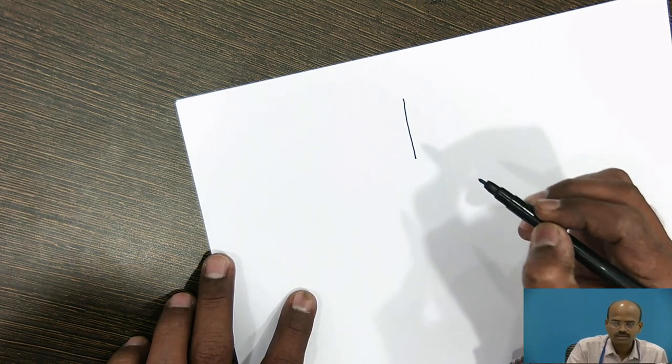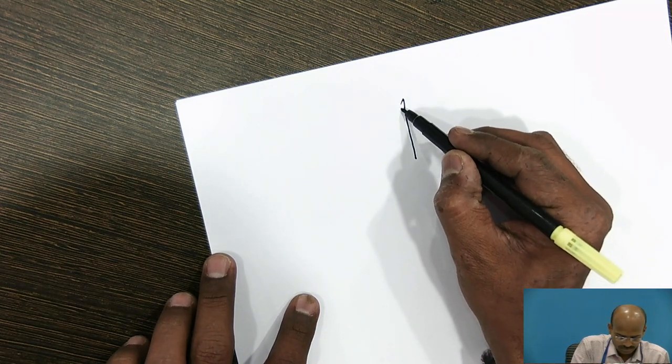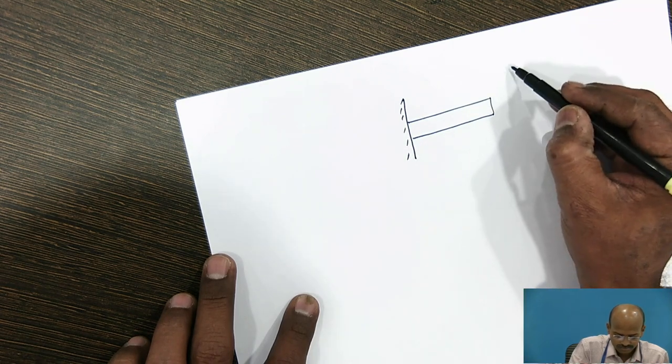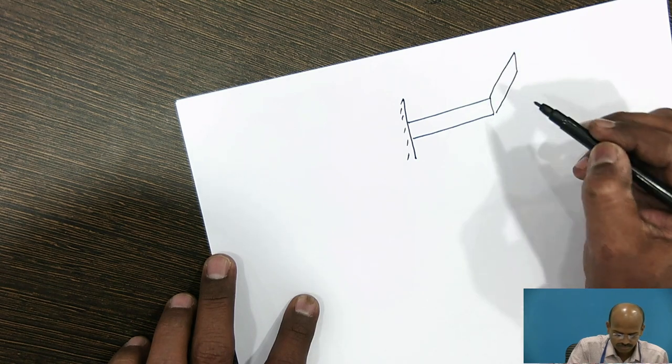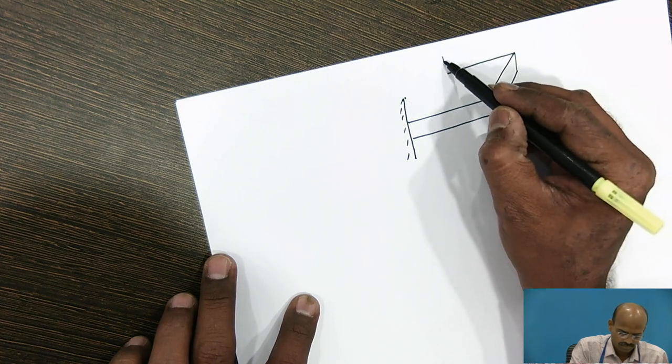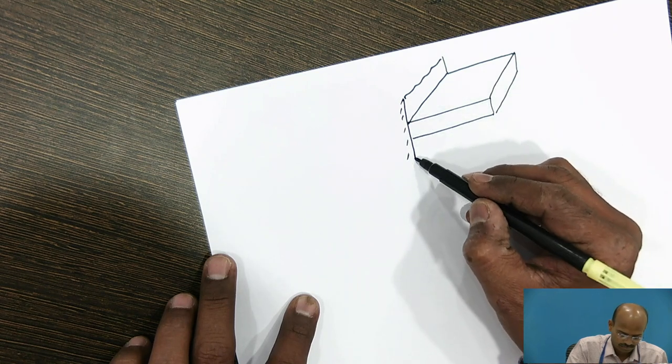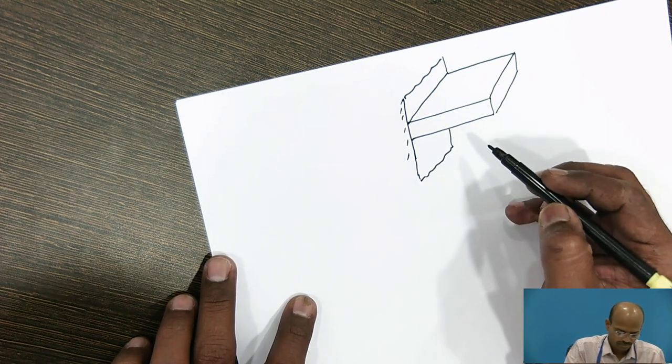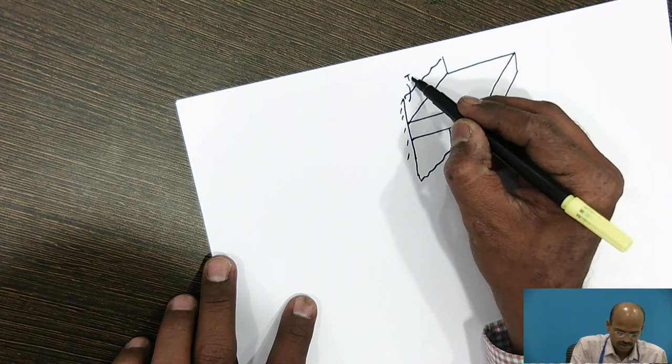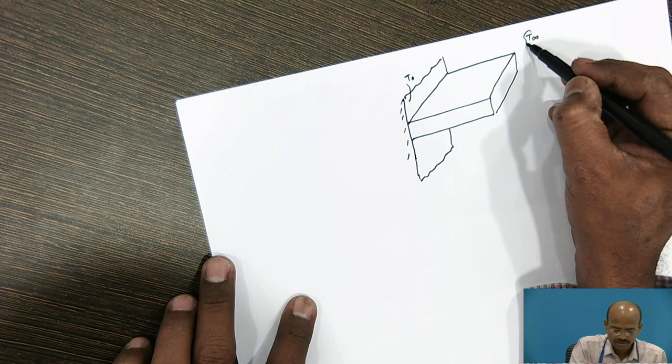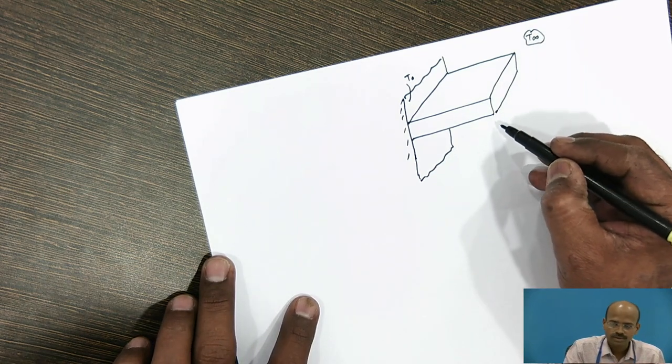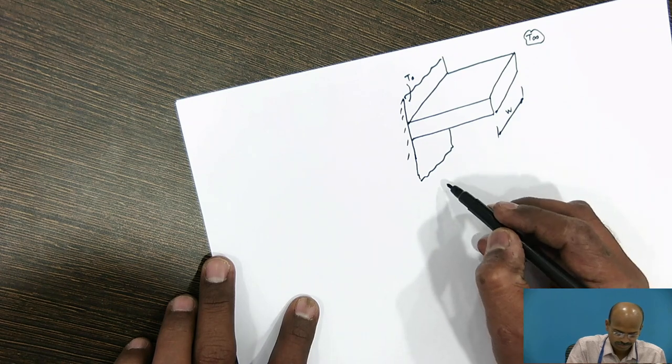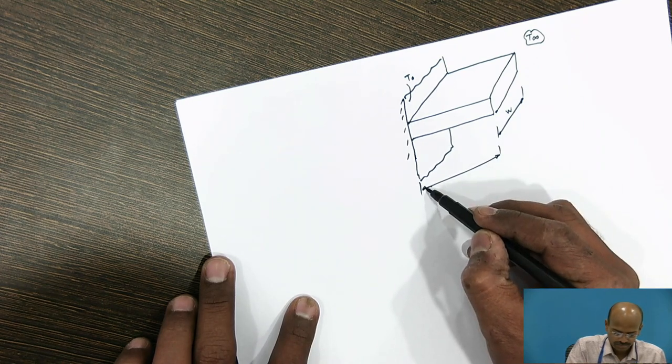Consider this as a base surface. On this base surface, this is the rectangular fin. Base surface has temperature T0, surrounding fluid temperature T∞, the width of this fin is W, the length of the fin is L.